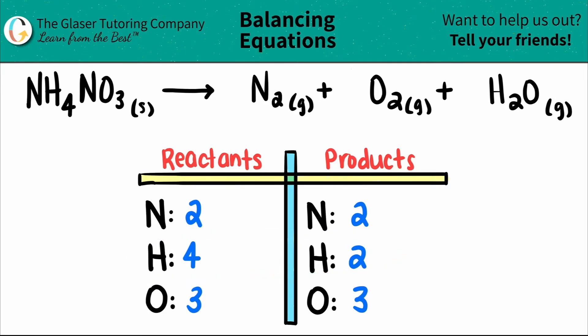So I'm going to balance it out, but always go from the lower number to the higher number. Two times what will get me to four? Two times two. And whatever number that you stated is the coefficient that you place in front of the element that you're trying to balance. So I'm going to put a two here.